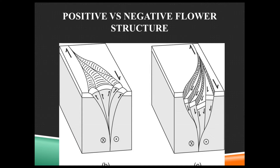It actually occurs in what we call flower structures. You can see here where the circle with an X is going into the screen, and the circle with a dot is coming out of the screen toward you — also shown with arrows on top of the blocks. This is a restraining bend with transpression, so we have reverse faulting and uplift. This is called a flower structure.